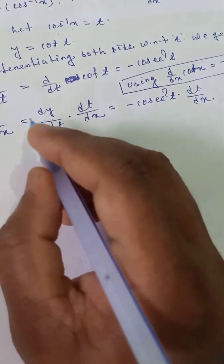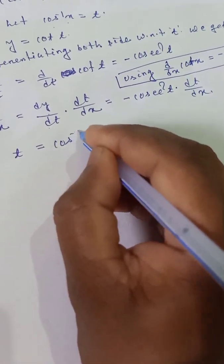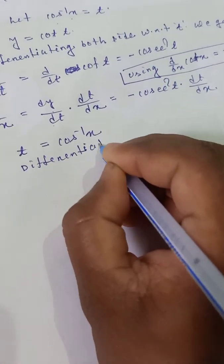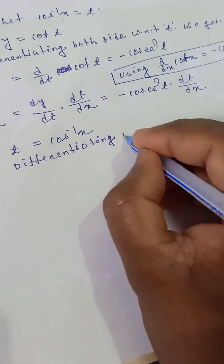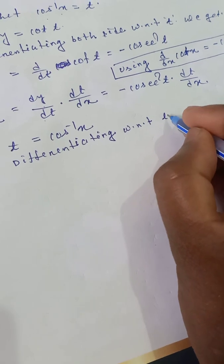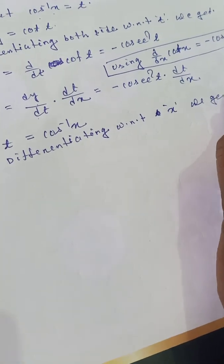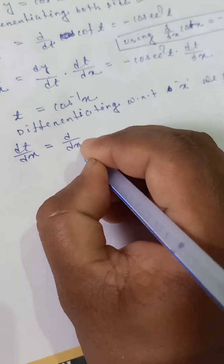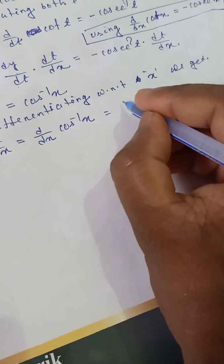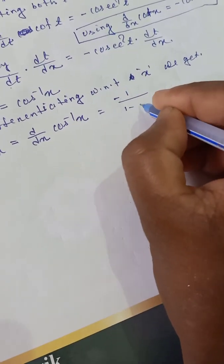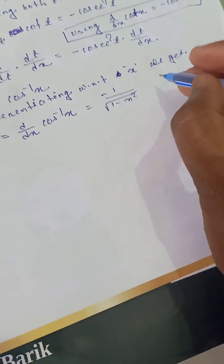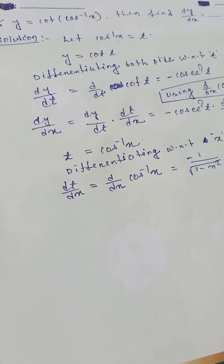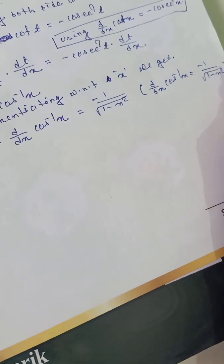But t is equal to cos inverse x. So differentiating with respect to x, we get dt by dx is equal to d by dx of cos inverse x, which is equal to minus 1 divided by square root of 1 minus x squared.